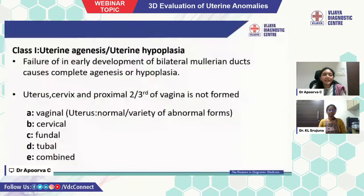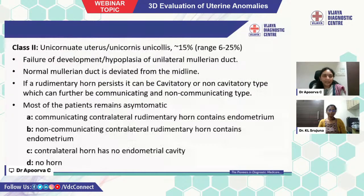There are 7 classes. Class 1 is uterine agenesis — failure in early development of bilateral Mullerian ducts causes complete agenesis or hypoplasia; the uterus, cervix, and proximal two-thirds of vagina are not formed. It is divided into vaginal, cervical, fundal, tubal, and combined subtypes. Class 2 is unicornuate uterus, ranging around 15% — failure of development or hypoplasia of unilateral Mullerian duct. If a rudimentary horn persists, it can be cavitary or non-cavitary type, which can further be communicating and non-communicating type.